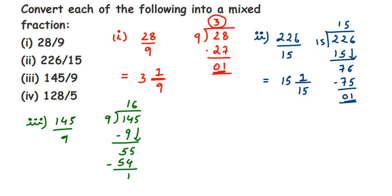We stop there and write the mixed fraction. The denominator is 9, so the mixed fraction also has 9 in the denominator. The whole number is the quotient 16, and the remainder is 1, so 1 goes in the numerator. Therefore 16 1/9 is the answer for 145/9.